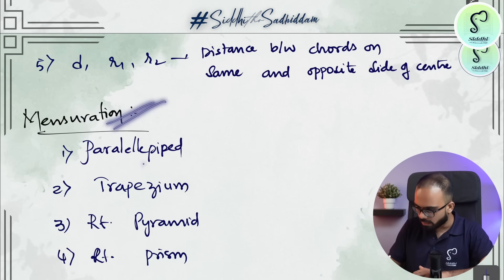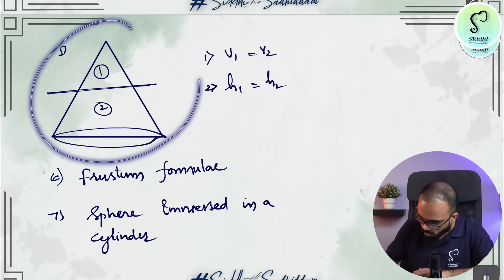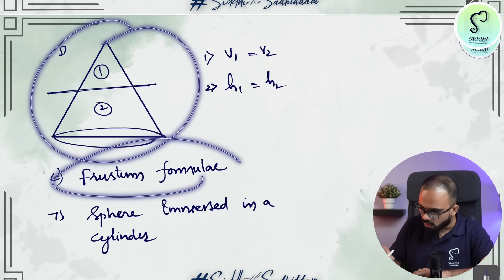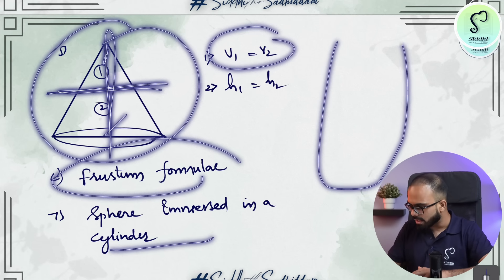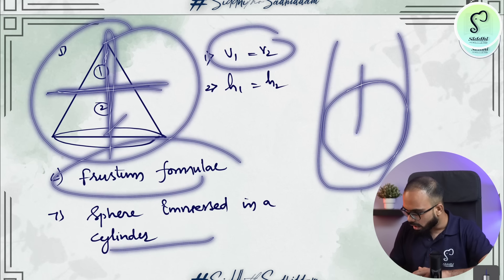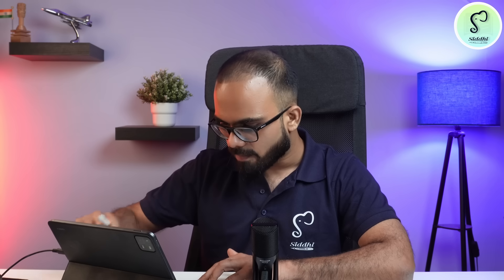Then questions of mensuration specifically parallelepiped, trapezium, right pyramid, right prism, then cone, then frustum. And cone is divided into half where volume 1 is equal to volume 2 or height 1 is equal to height 2. And there is a cylinder, a sphere is immersed in it, how much amount of water is displaced. These kind of questions.